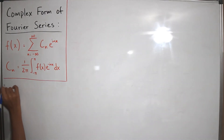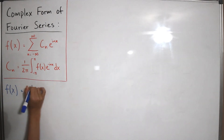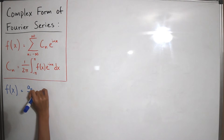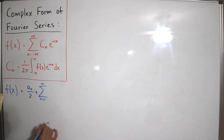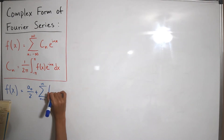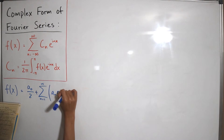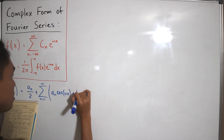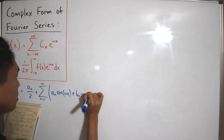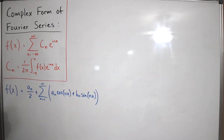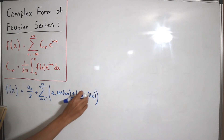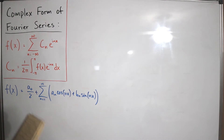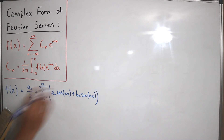Starting with the normal representation of the Fourier series: f(x) equals a sub zero divided by two, plus the infinite sum from n equals one to infinity of a sub n times cosine of n times x, plus b sub n times sine of n times x. When dealing with the period from negative π to π, L equals π is substituted in. L describes half the period of the function.